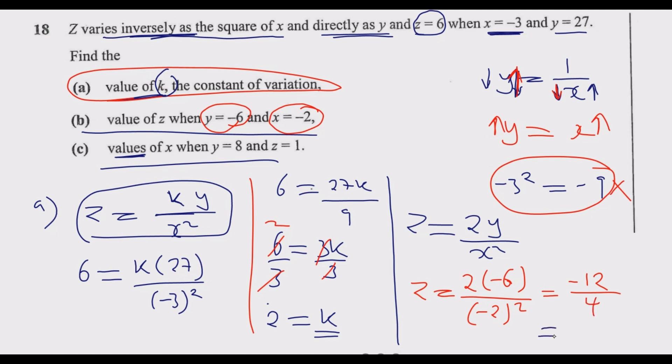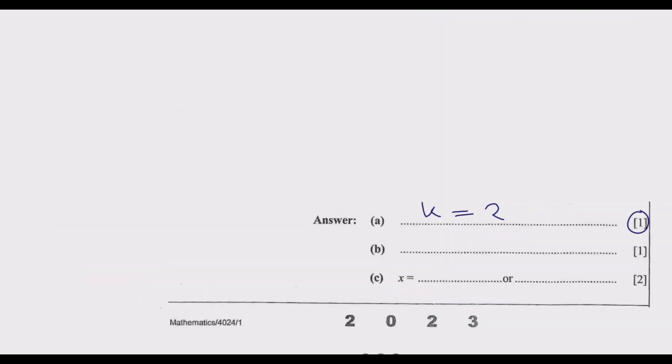Divide by negative 2 times negative 2, which is positive 4. Divide and you get negative 3, so the value of z is negative 3. You put negative 3 and get the 1 mark.